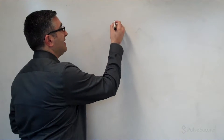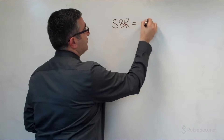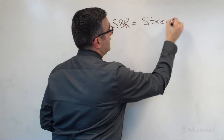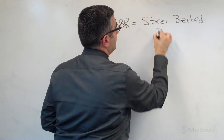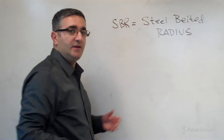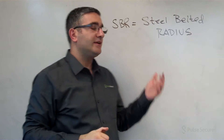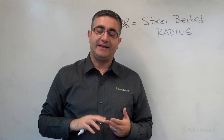Hello, this is Asher Canoon with Pulse Secure Technical Marketing, and today we're going to take a quick look at SBR. So what is SBR and what does it stand for? SBR stands for Steel Belted Radius. It is a AAA server that's running RADIUS. AAA is authentication, authorization, and accounting.